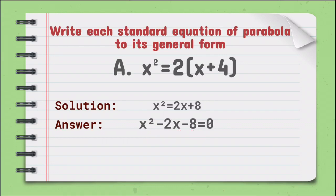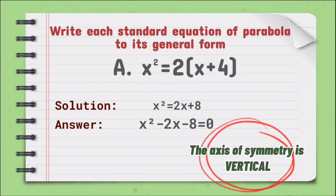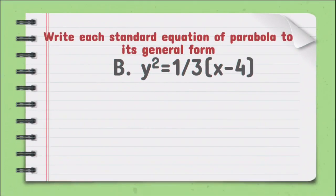Where A and D are not equal to 0, and the axis of symmetry is vertical.